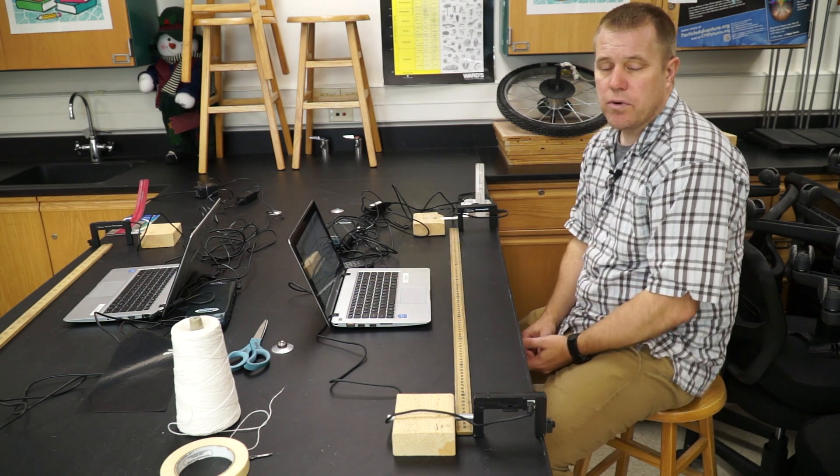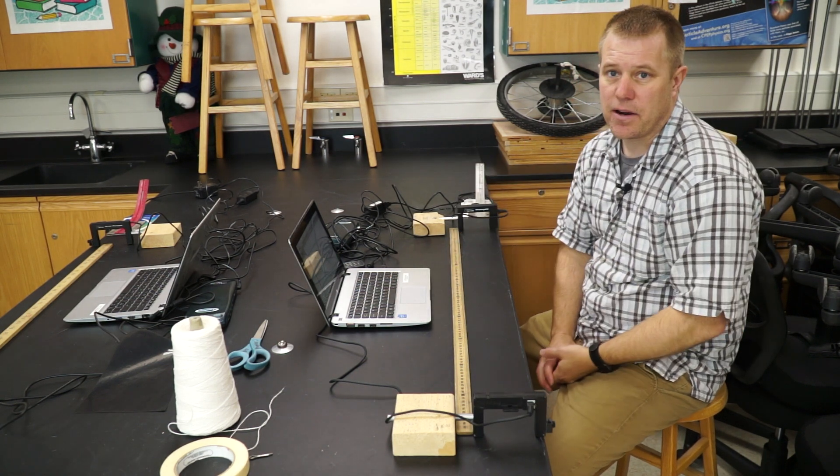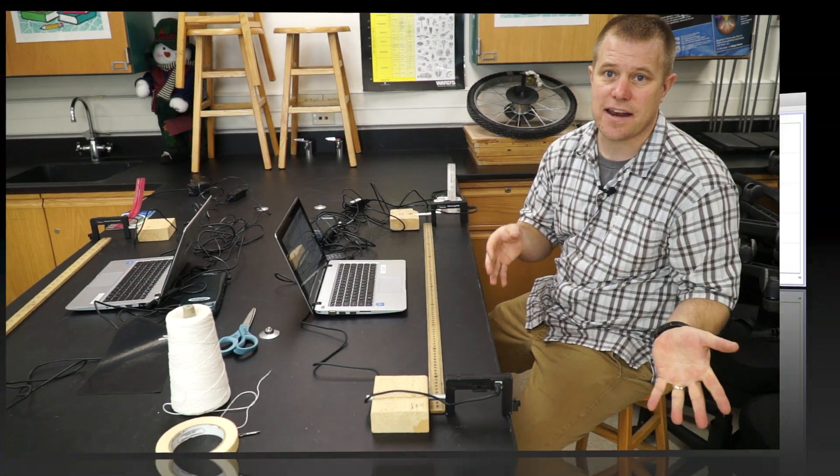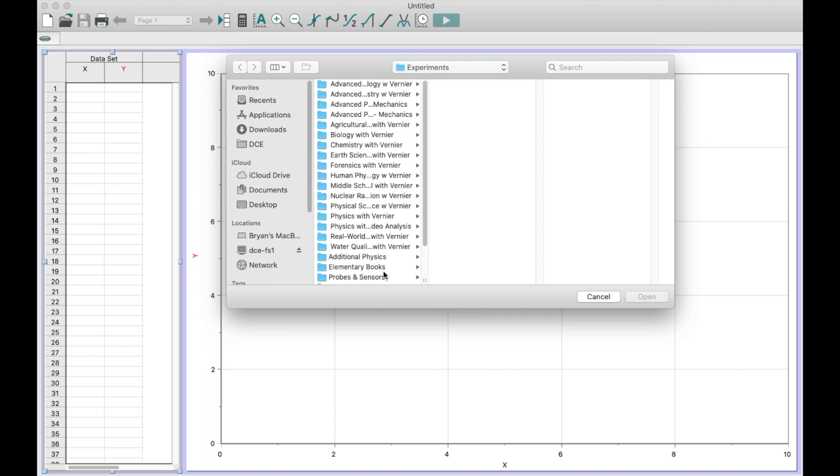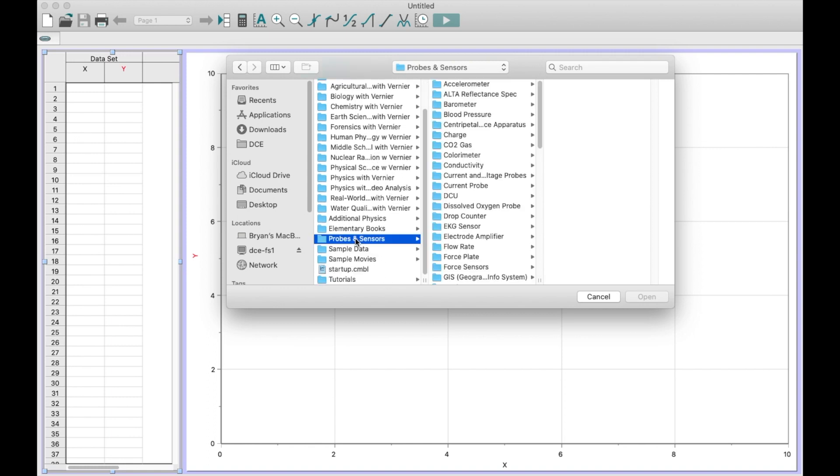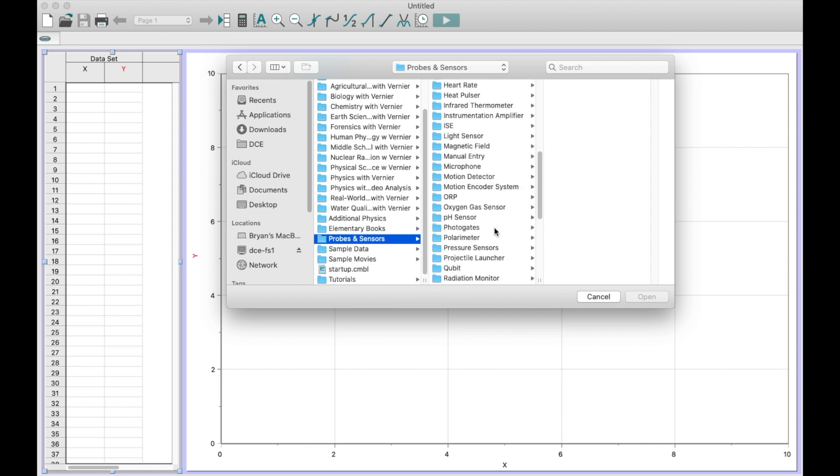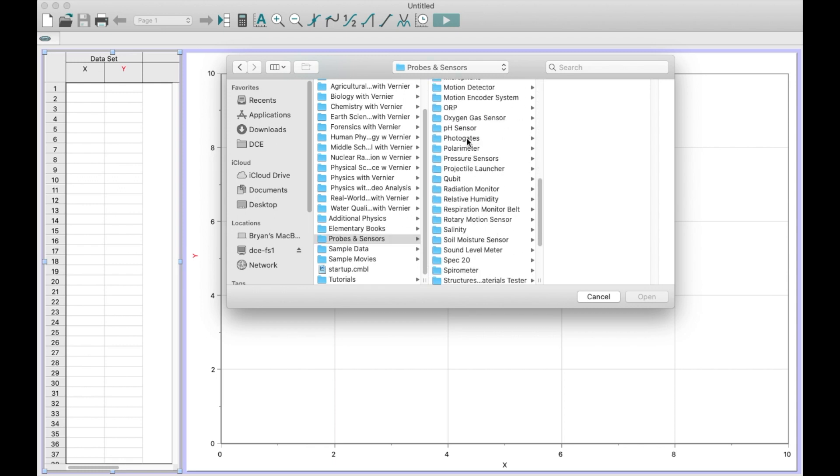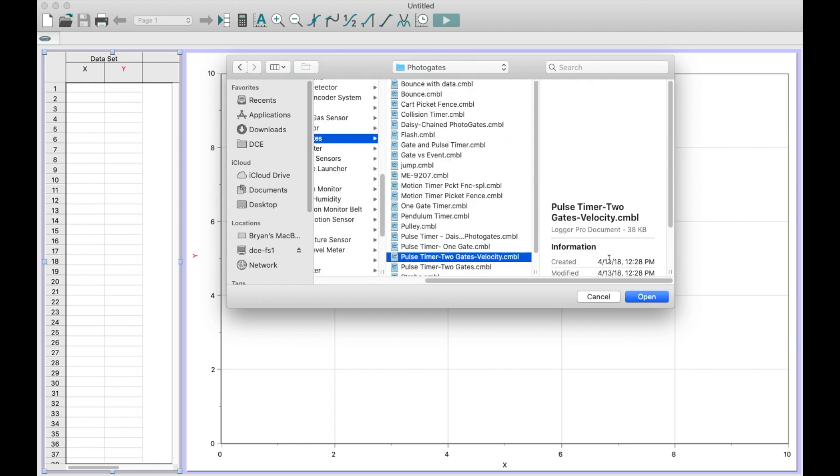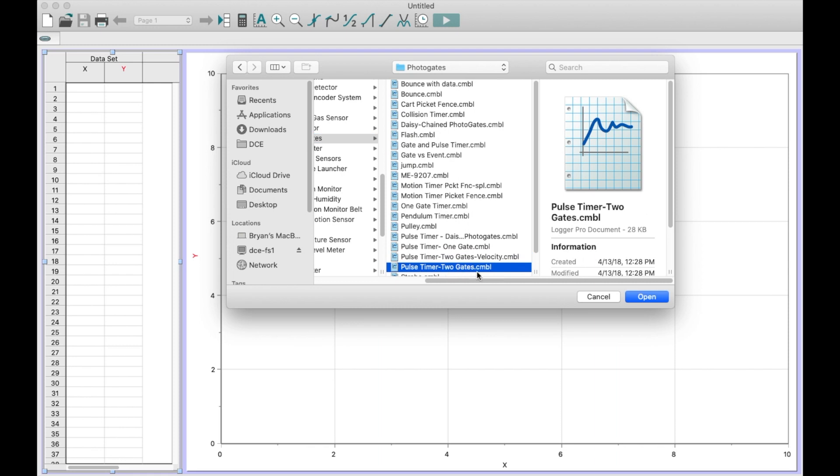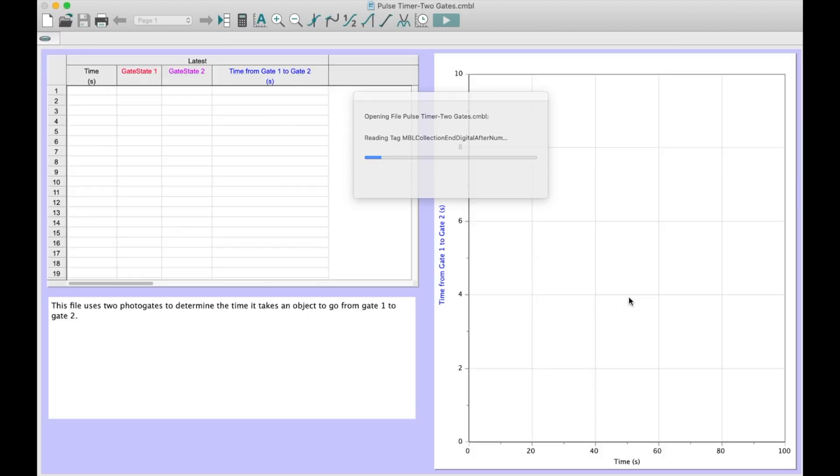What we're going to do next is we're going to go ahead and set up our computer. Here we are now. Yours is going to look a little different on the PC than on the Mac, but we're just going to go ahead and follow those instructions. The first thing we want to do is open up our program. We're going to open this up, go down to probes and sensors. Once in probes and sensors, we're going to go down to photo gates. I want the pulse timer and I want the two gate one, pulse timer two gates. Hit open and it should open up.